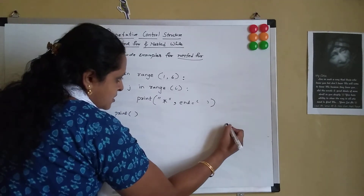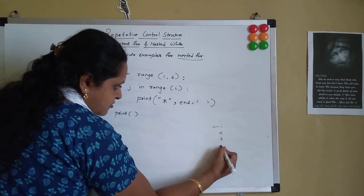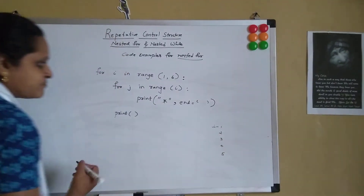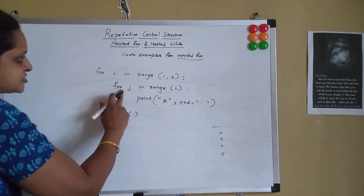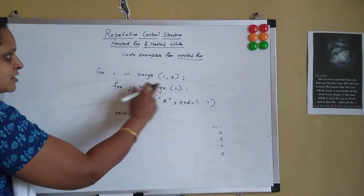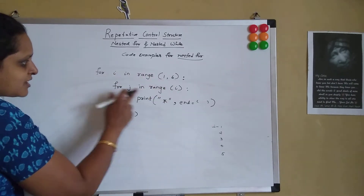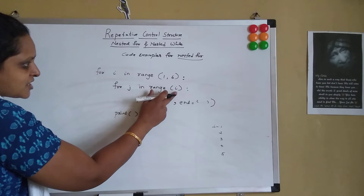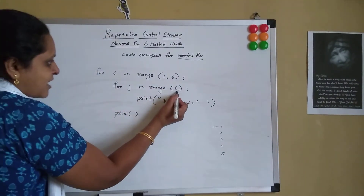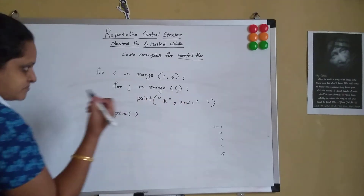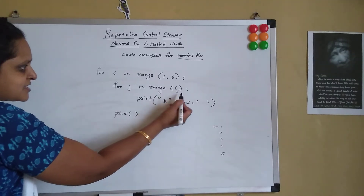Then I say print('*', end=' '). Then I say print — just the print command with no arguments. So how does this particular for loop work? Range means it takes from 1 till n minus 1. So i ranges from 1 to 5. And for every value of i, j ranges from 0 to the value of i minus 1. So initially i would have the value 1, so here in the j loop the range(i) is replaced by range(1).